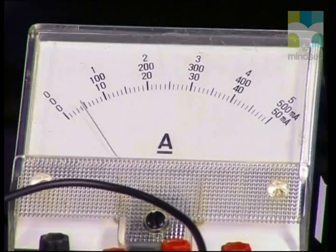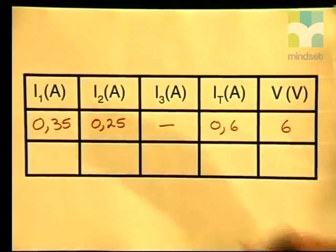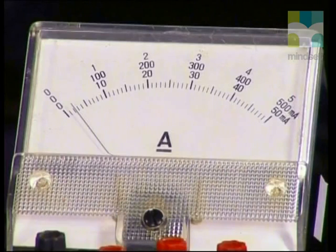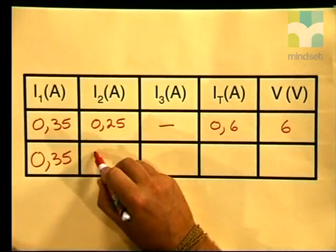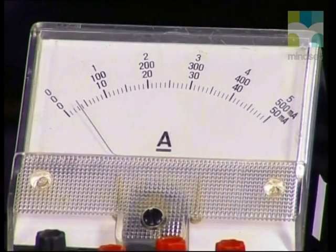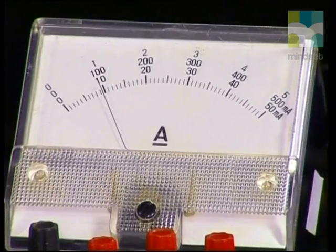Let's answer that question by repeating our experiment using all three resistors in parallel. The current through resistor 1 is 0.35 amperes — so I1 is 0.35 amperes. The current through R2 is 0.25 amperes — so I2 is 0.25 amperes. The current through R3, the additional 10 ohm resistor connected in parallel, is 0.35 amperes — so I3 is 0.35 amperes. And now to measure the total current — our ammeter reading is 0.95 amperes.